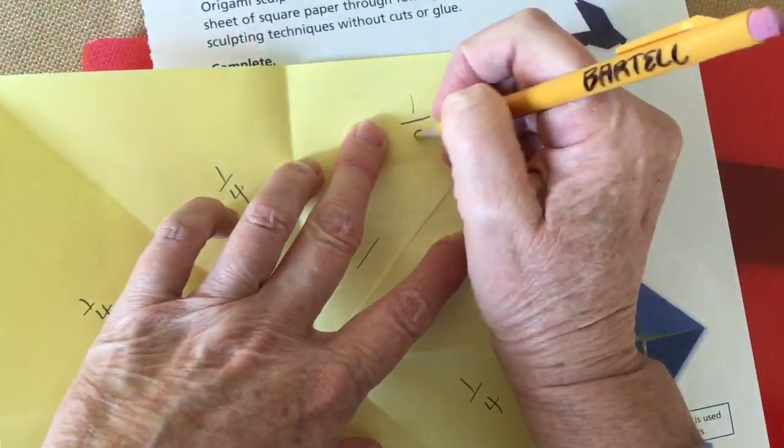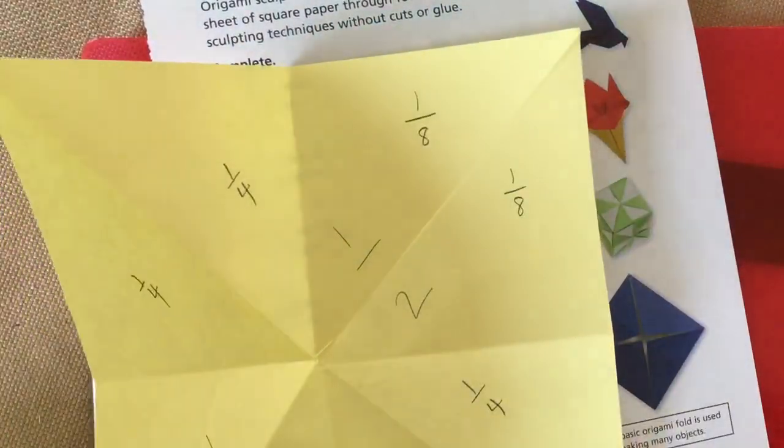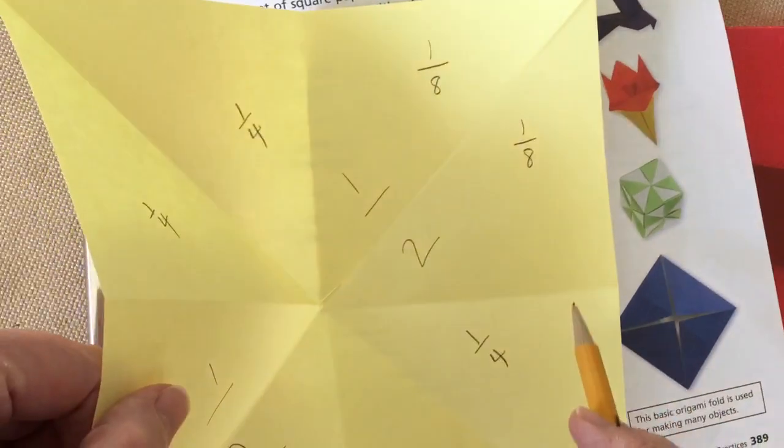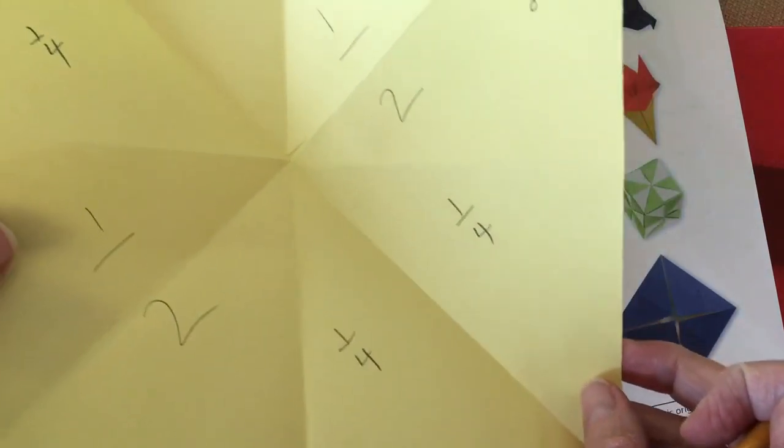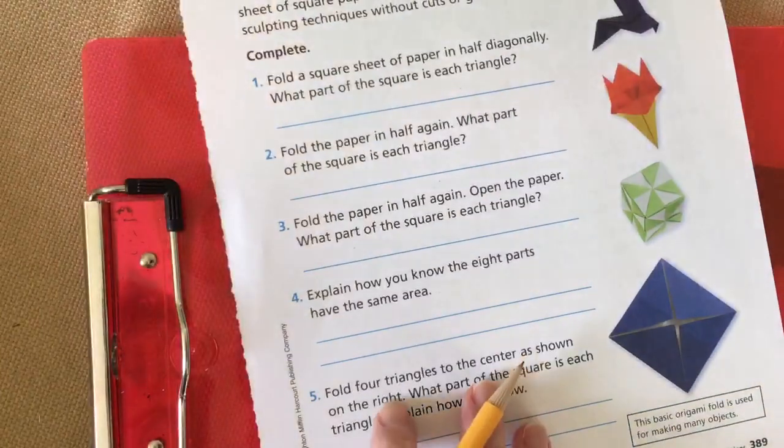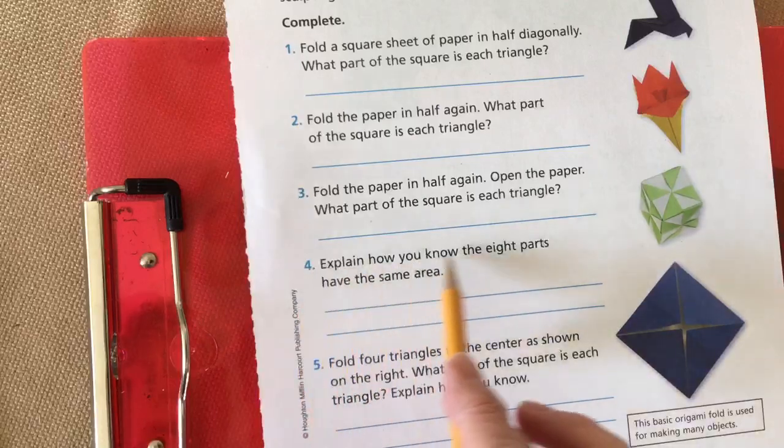So each of these new pieces is an eighth. Oh, I see a right triangle right here. Hopefully you're recognizing some of the types of triangles that you're seeing.